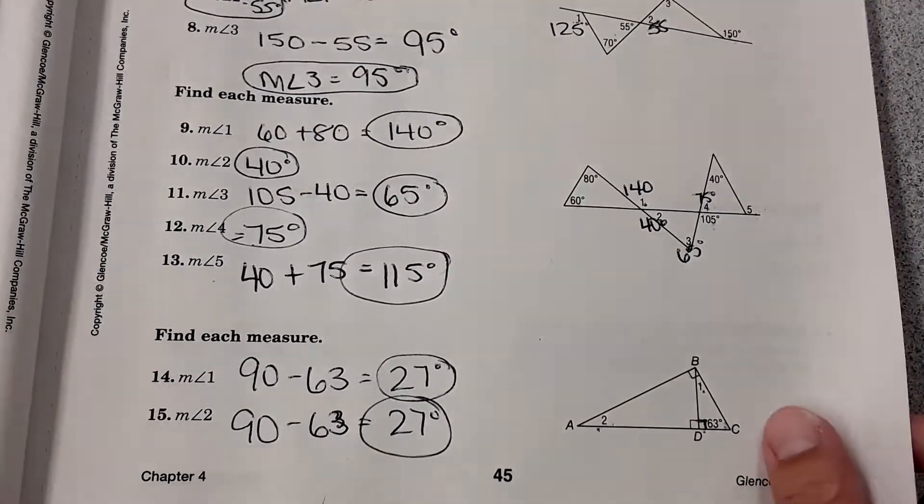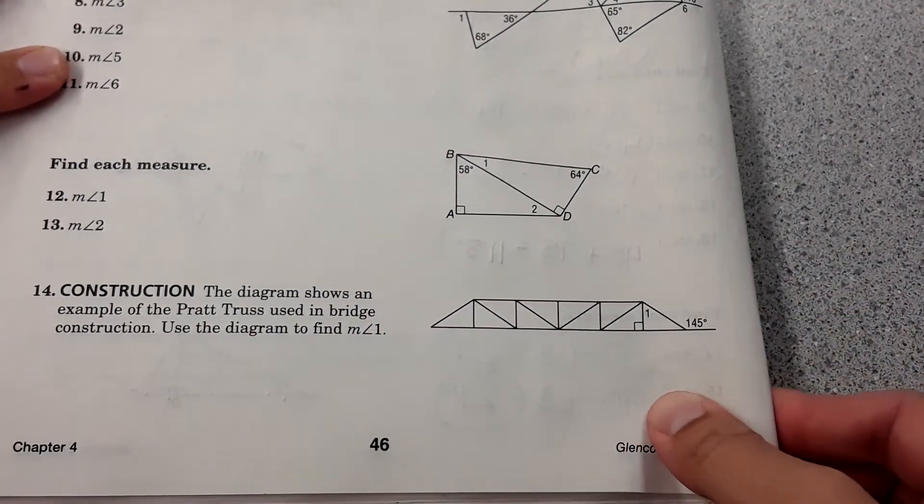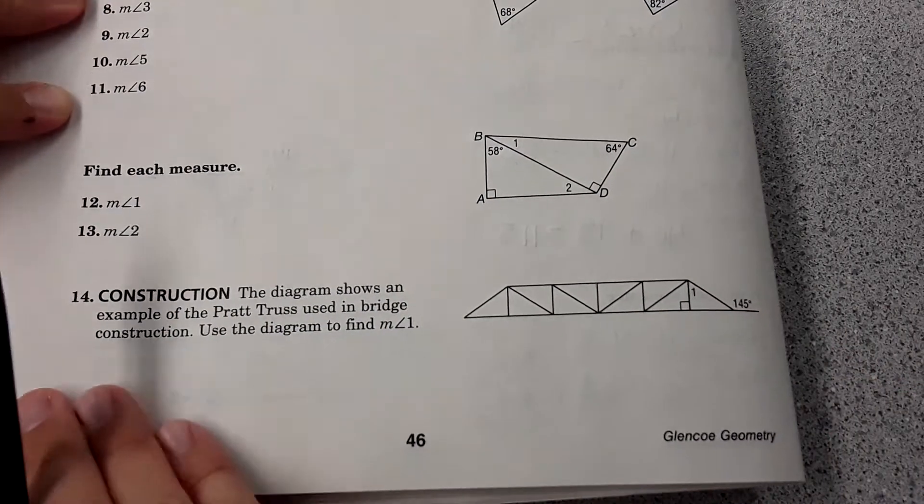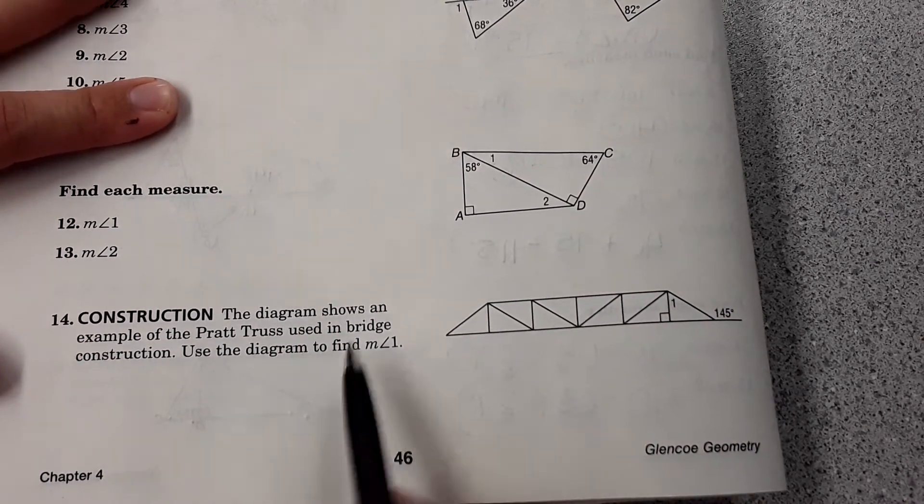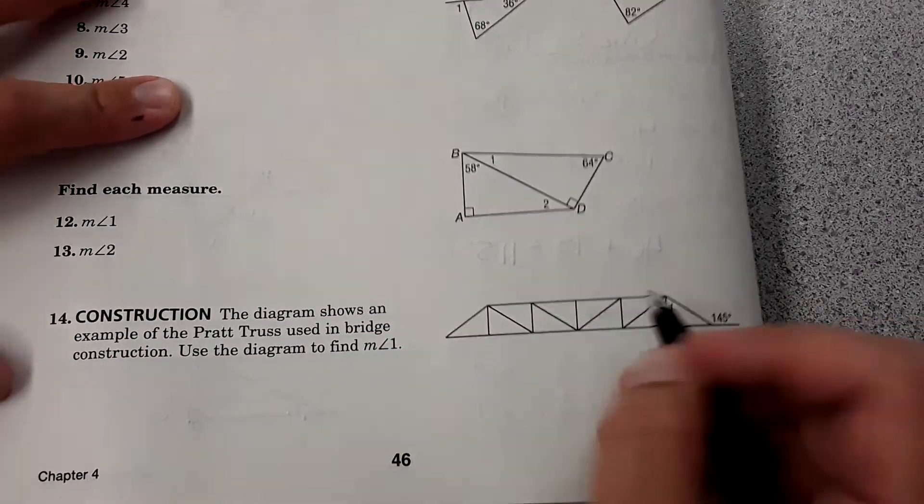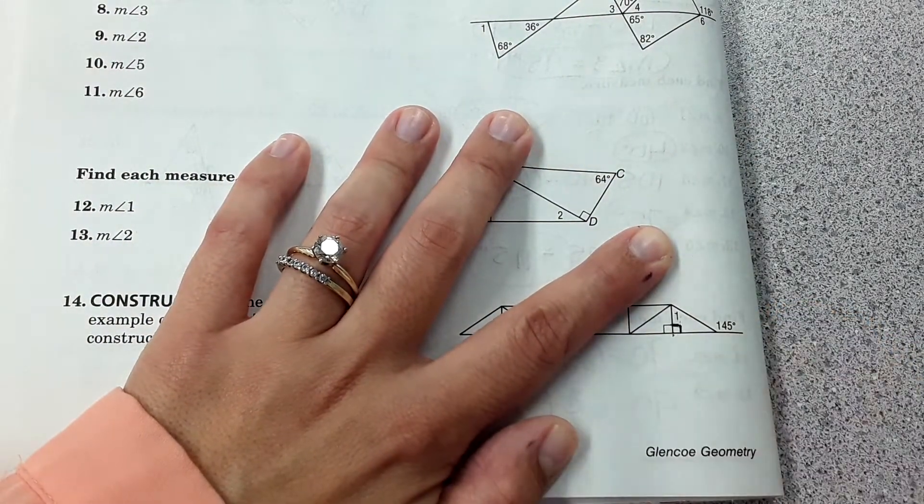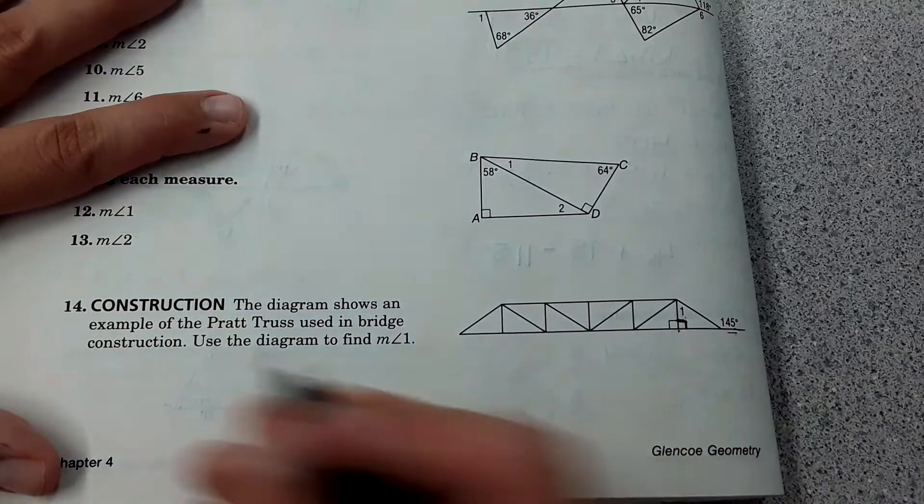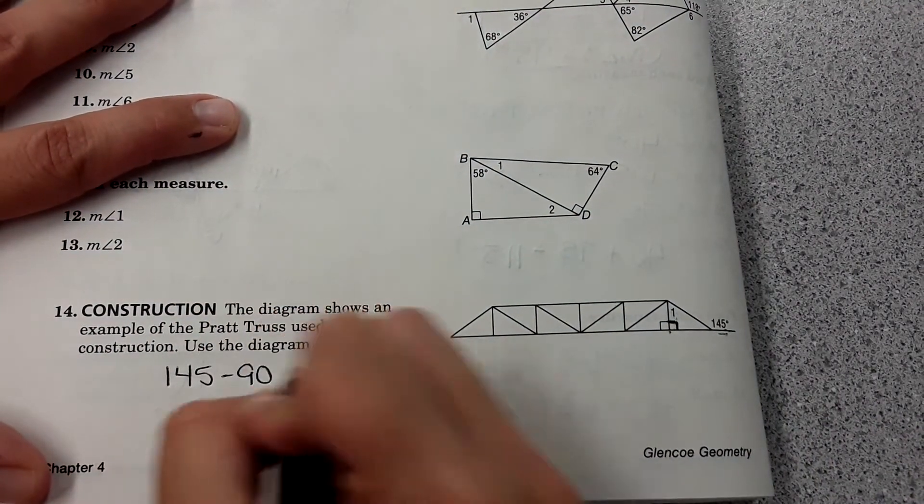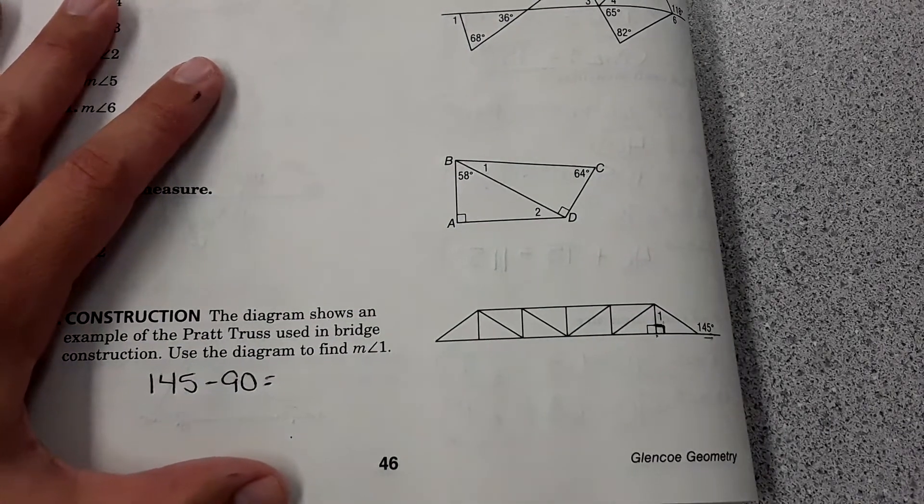So what we're going to do is we're going to go over one problem that shows up on the homework, number 14. It says the diagram shows an example of the Pratt truss used in bridge construction. Use the diagram to find the measure of angle one. Well, in the diagram it shows a 90 degree angle there, so that means this must be 90 degrees as well. We have the exterior angle, these two angles must add to 145. So 145 minus the 90 degree angle equals 55, 55 degrees.